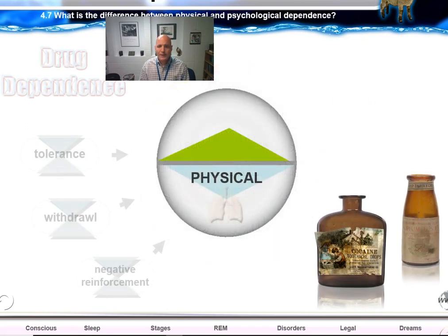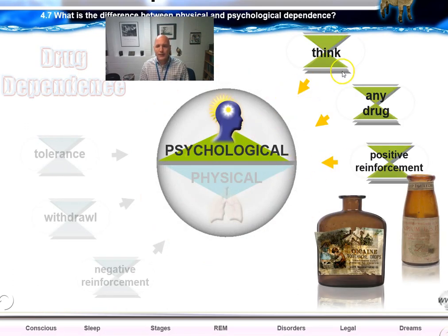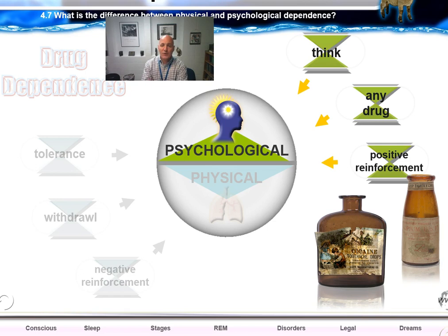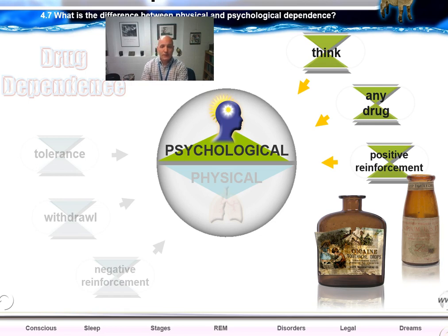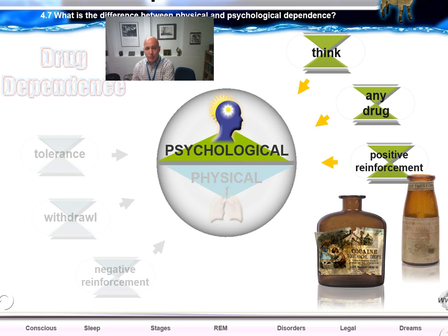There is also a psychological addiction. Marijuana, for instance, is not physically addictive, but a person may begin to think obsessively about the drug — an obsession where they can't stop thinking about it. This works via positive reinforcement. So you have both a physical chemical dependence and a psychological dependence.